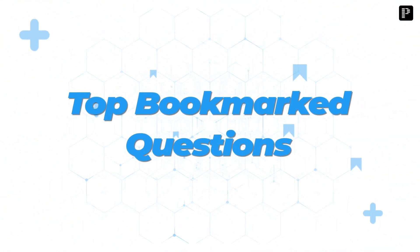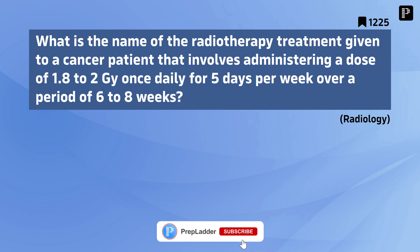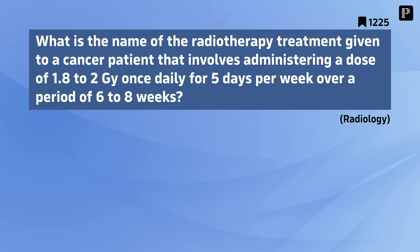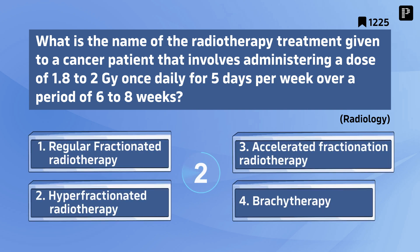Top Bookmarked Questions. Question 1: What is the name of the radiotherapy treatment given to a cancer patient that involves administering a dose of 1.8 to 2 grays once daily for 5 days per week over a period of 6 to 8 weeks? The correct answer is Regular Fractionated Radiotherapy.